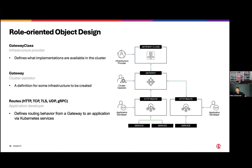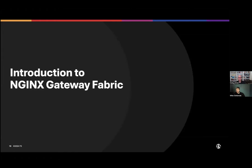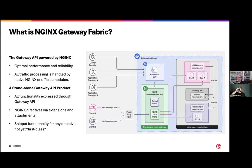Bringing it all together: we have the gateway class, we define our gateway itself, and then we're able to define the HTTP routes that map to the individual services behind them. The Gateway API is a specification — it's not an implementation itself. That's where F5 NGINX created the NGINX Gateway Fabric. What is the Gateway Fabric? It is a Gateway API implementation using NGINX.